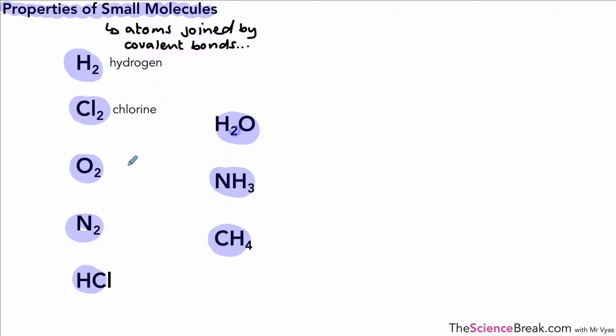So this is hydrogen, chlorine, oxygen, nitrogen, this is hydrogen chloride, this is water, this is ammonia, and this is methane.